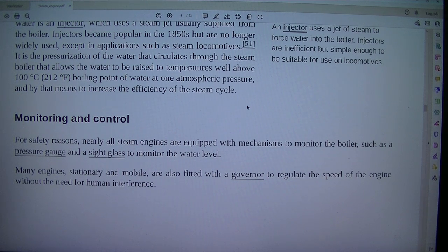Monitoring and control. For safety reasons, nearly all steam engines are equipped with mechanisms to monitor the boiler, such as a pressure gauge and a sight glass to monitor the water level. Many engines, stationary and mobile, are also fitted with a governor to regulate the speed of the engine without the need for human interference.